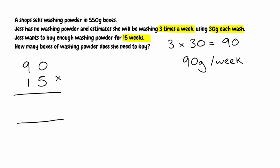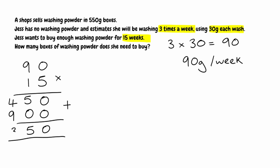To calculate 90 multiplied by 15: first, 5 times 0 is 0, and 5 times 9 is 45. Moving to the tens column, we need a placeholder 0 in the units column. Then 1 multiplied by 0 is 0, and 1 multiplied by 9 is 9. So we have 450 and 900, which we add together: 0+0=0, 5+0=5, and 4+9=13. So Jess is going to need 1,350g of washing powder in total.